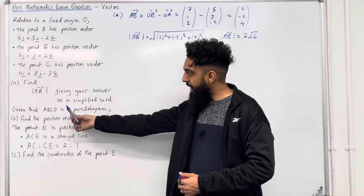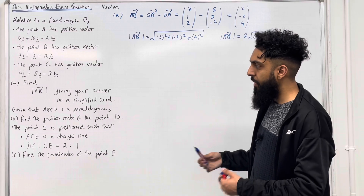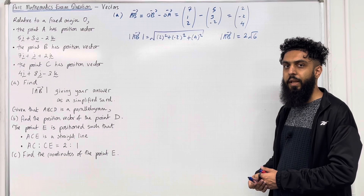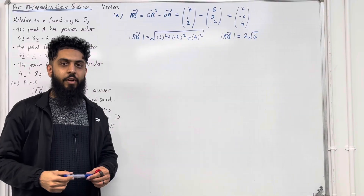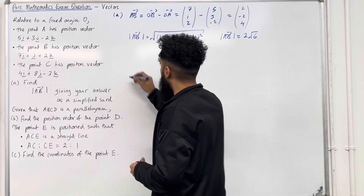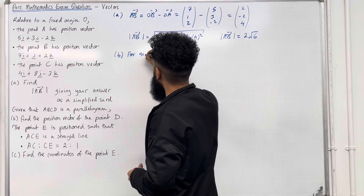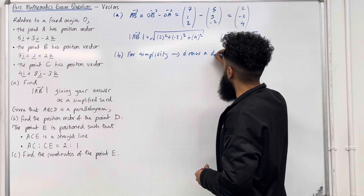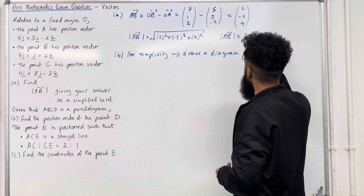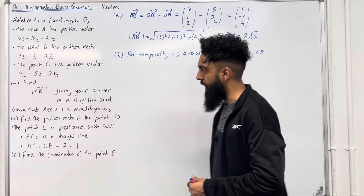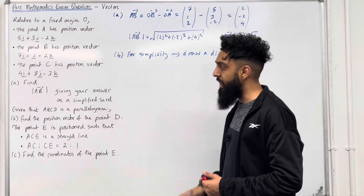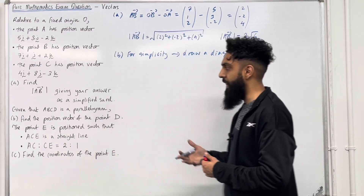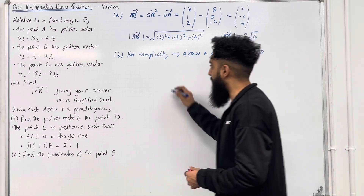Moving on to part B. Given that ABCD is a parallelogram, part B asks us to find the position vector of the point D. Please pause the video, have a go at part B, and once you've got your complete solution, play the video. For part B, for simplicity I'm going to draw a diagram in 2D. So we've got a parallelogram ABCD.